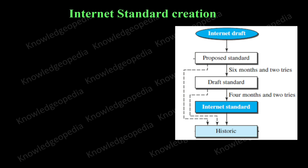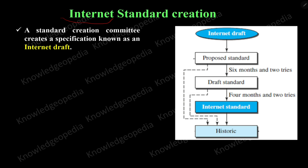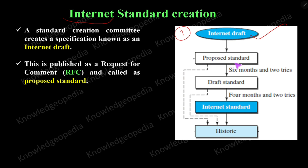We discussed how a standard is created. Now we will focus on internet standard creation, specifically for the internet. The standard creation committee creates a specification known as an internet draft — that is the first stage. Then that will be published for request for comment, which is called the proposed standard — the second stage.